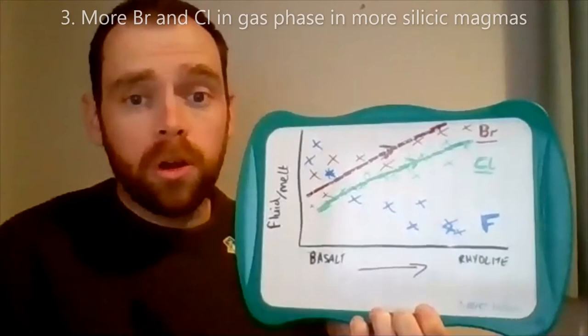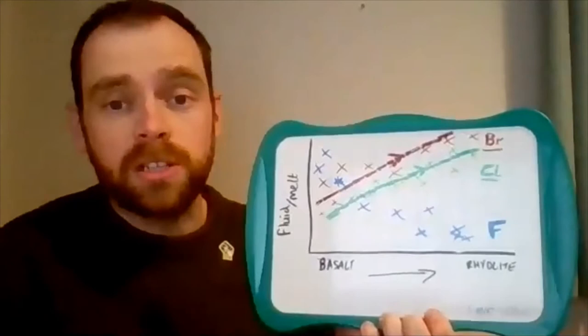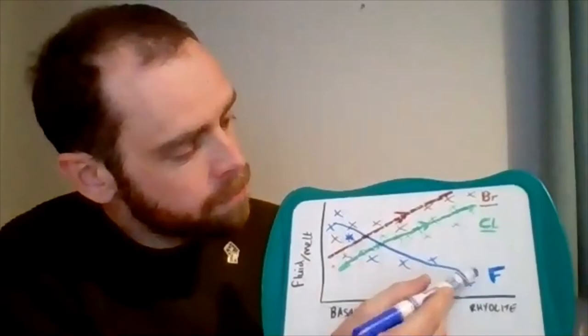More chlorine and bromine seem to partition into the gas phase at more silicic compositions, whereas fluorine seems to be the opposite.